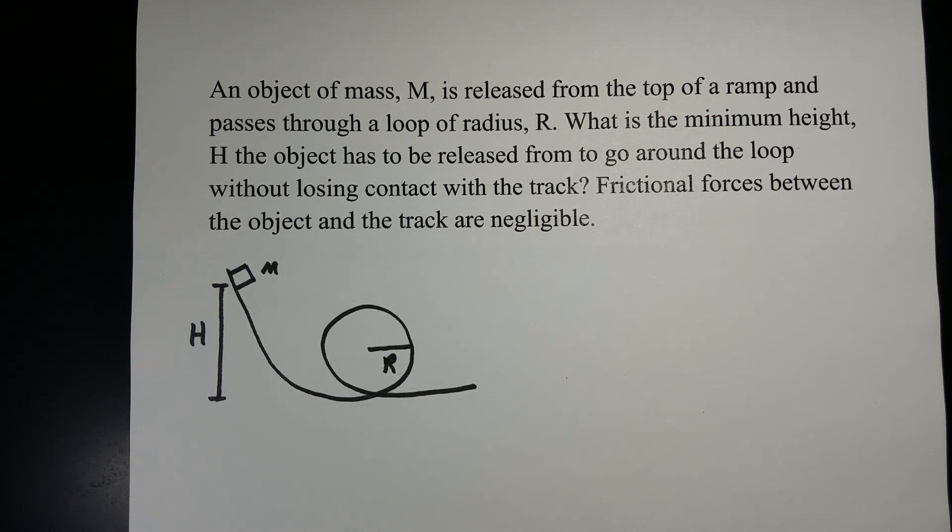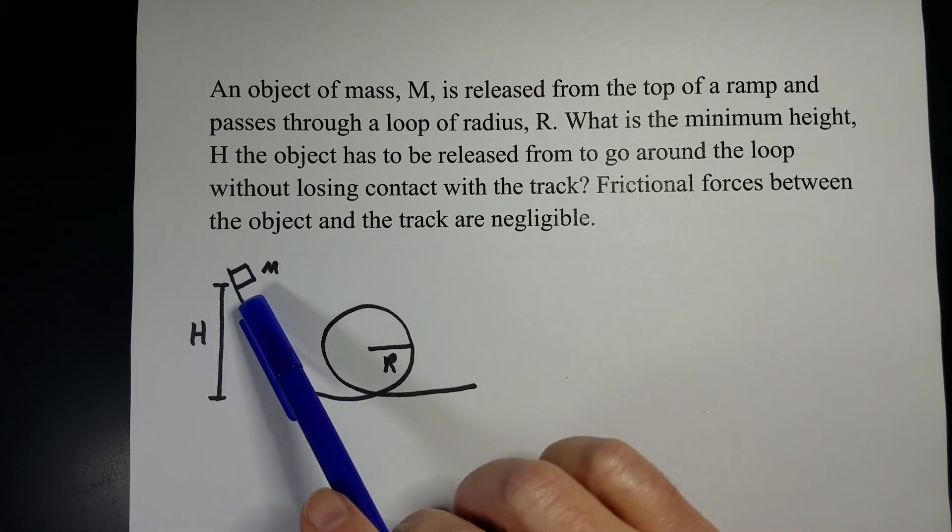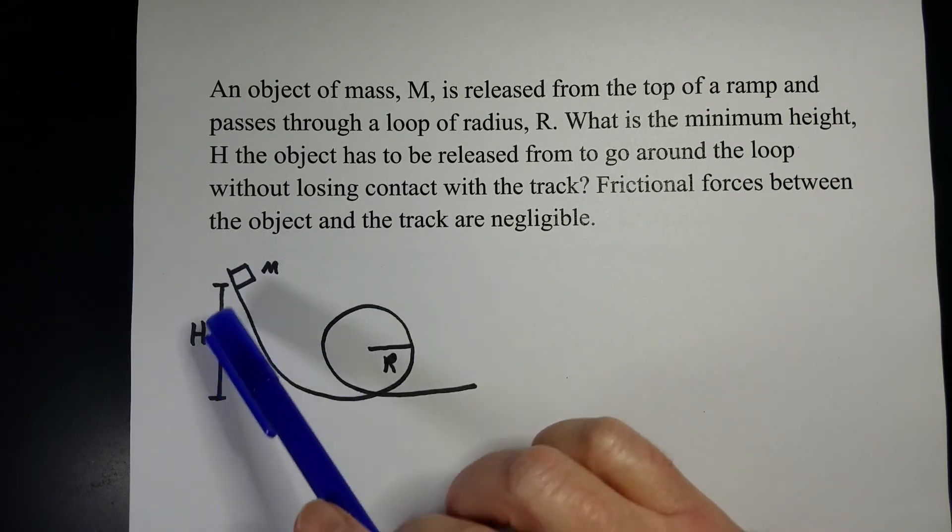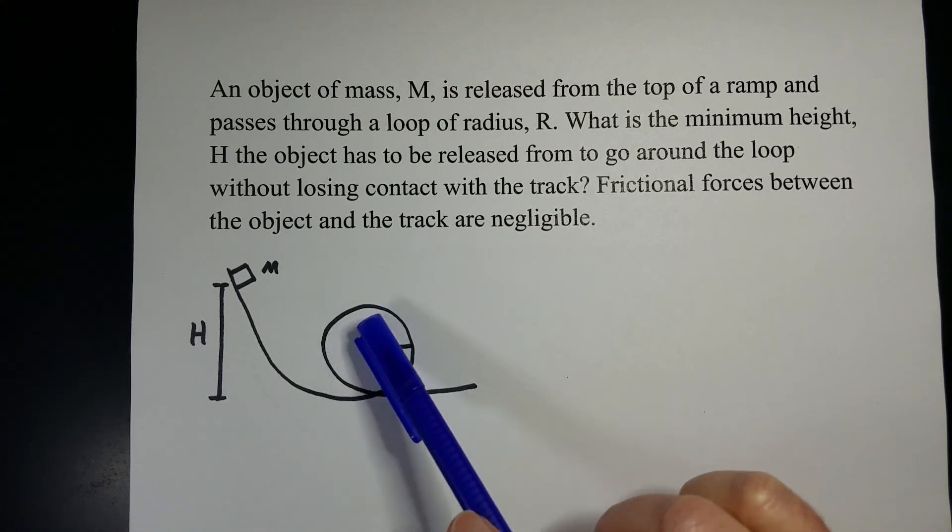Hi, this is Kayleigh and we're going to talk about combining energy and circular motion. In this problem we've got a mass dropped from a height H that needs to make it all the way through this loop without losing contact with the track.